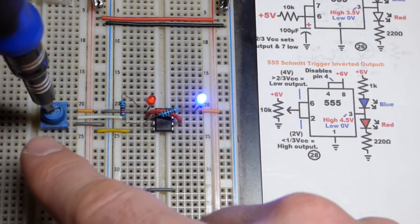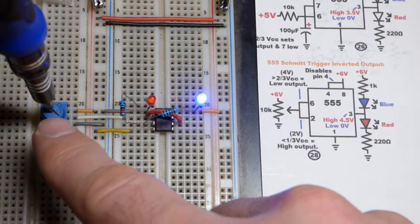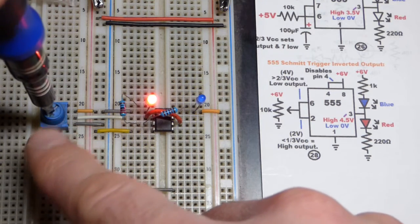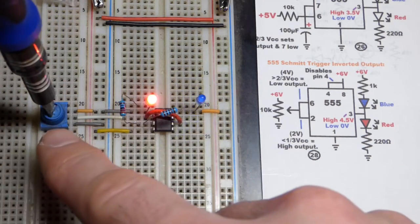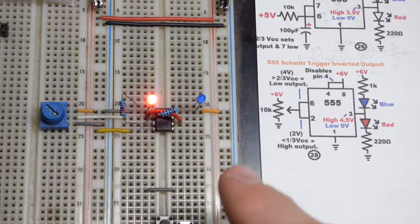Now I have to drop below one-third of the supply voltage, that sets the output high. So we have a predictable hysteresis range here between one-third and two-thirds. It will stay in whatever state that it is in. You have to go above two-thirds to set the output low.